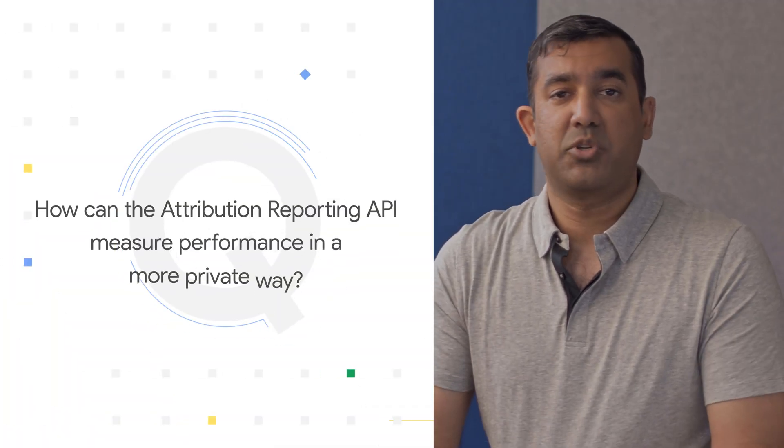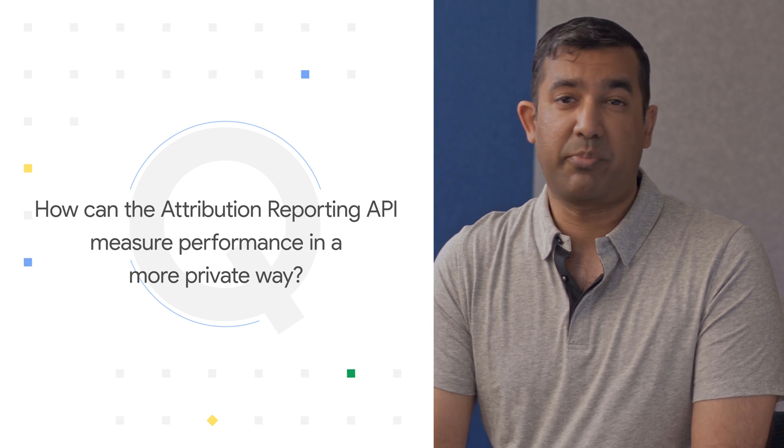Question 2: How can the Attribution Reporting API help measure performance in a more private way? The Privacy Sandbox technologies provide a way to support use cases such as conversion measurement without requiring the use of third-party cookies or other cross-site identifiers to track users across the web. This is possible thanks to advancements in privacy-preserving techniques, such as putting people into groups, randomizing the data and adding noise so that it doesn't reveal users' identity across sites, and limiting the amount of information that ever leaves someone's device or browser. For example, with the Attribution Reporting API, we can record and match ad engagement and conversion events locally in the user's browser, so the data stays on their own device where it can remain private.